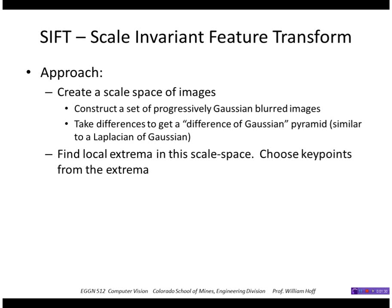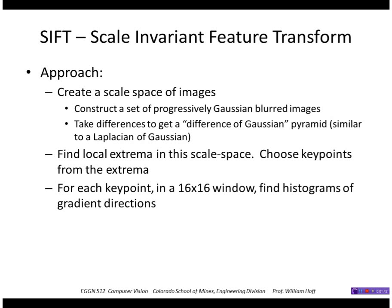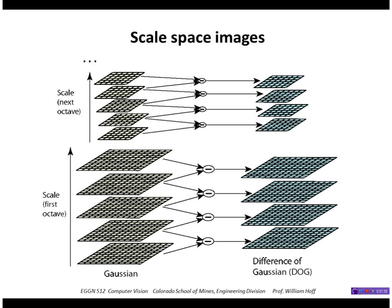We next find local extrema in this scale space, which removes scale uncertainty. We can find key points or features reliably no matter how large they are by looking for the right scale at which they can be found. Once we have found these key points, we compute a feature vector by finding the histogram of gradient directions around the feature point, which can then be matched to another image.